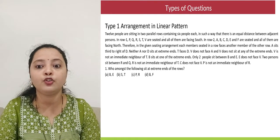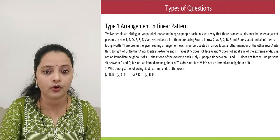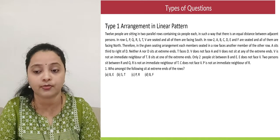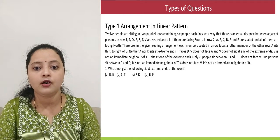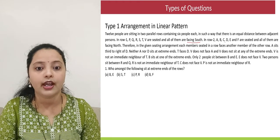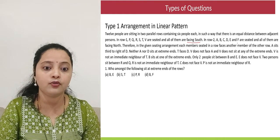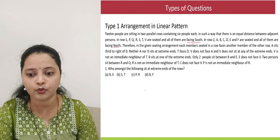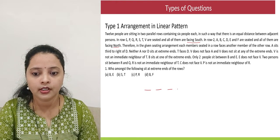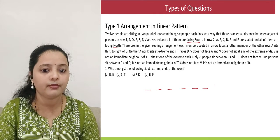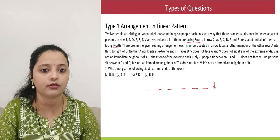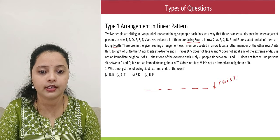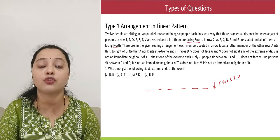The question says: 12 people are sitting in 2 parallel rows containing 6 people each, such that there is equal distance between adjacent members. Row number 1 has P to V, all of them facing south. Row number 2 has A to F, all of them facing north. We will make 2 rows. Row number 1 is where everybody is facing south — P, Q, R, S, T, and V. We will have to figure out in which order they are sitting.